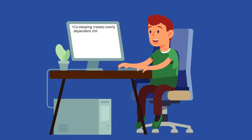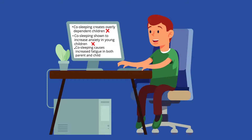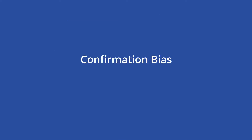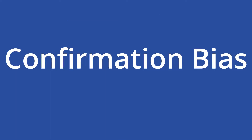This means that rather than searching through all the evidence, the individual may focus solely on the information and evidence that supports their hypothesis. This type of cognitive error is known as confirmation bias.